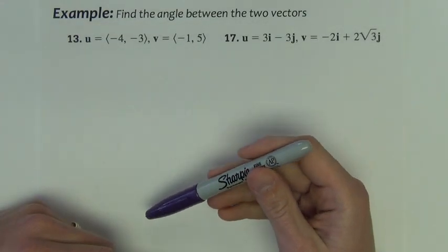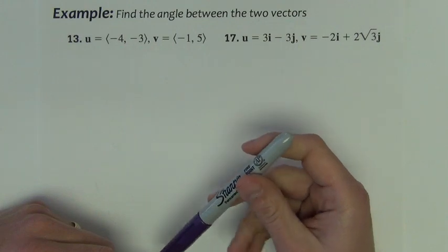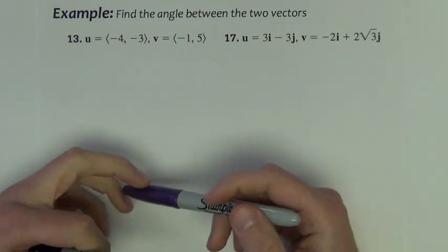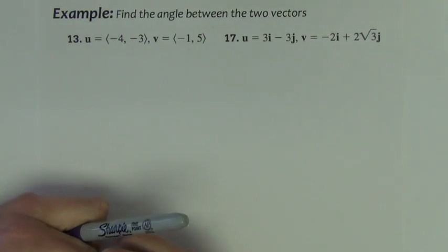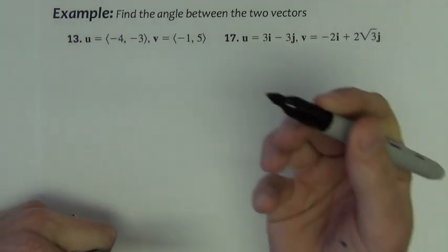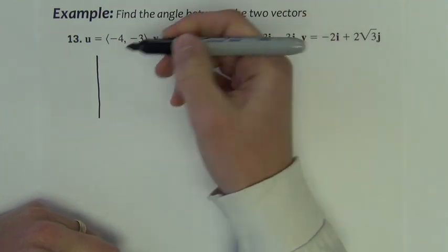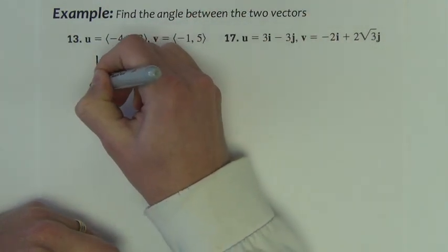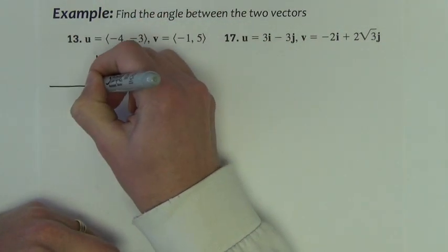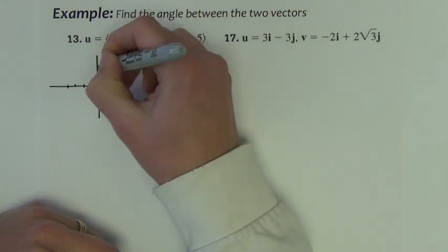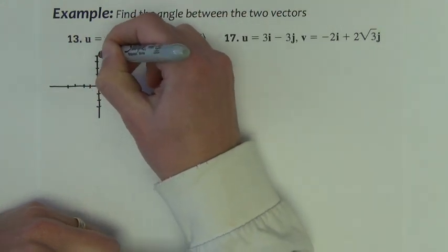How about a couple of example problems, finding the angle between two vectors using the formula from the last slide. First one—if you want to see a picture of it, you can certainly draw one, although a picture is not required. Sometimes it is helpful. We have a vector at (-4, -3) and one at (-1, 5).